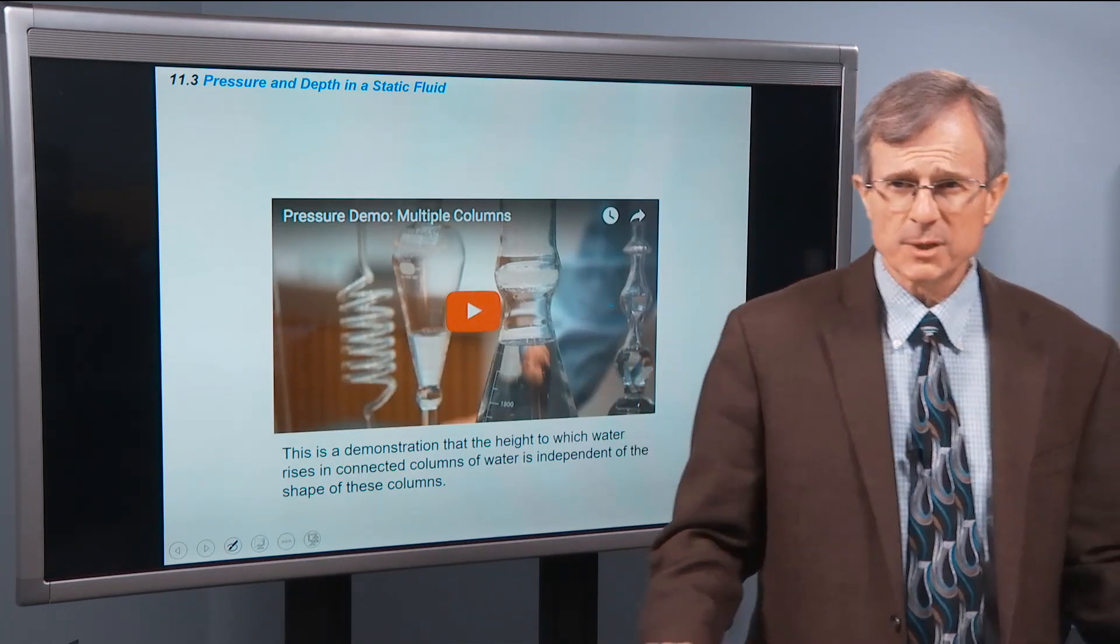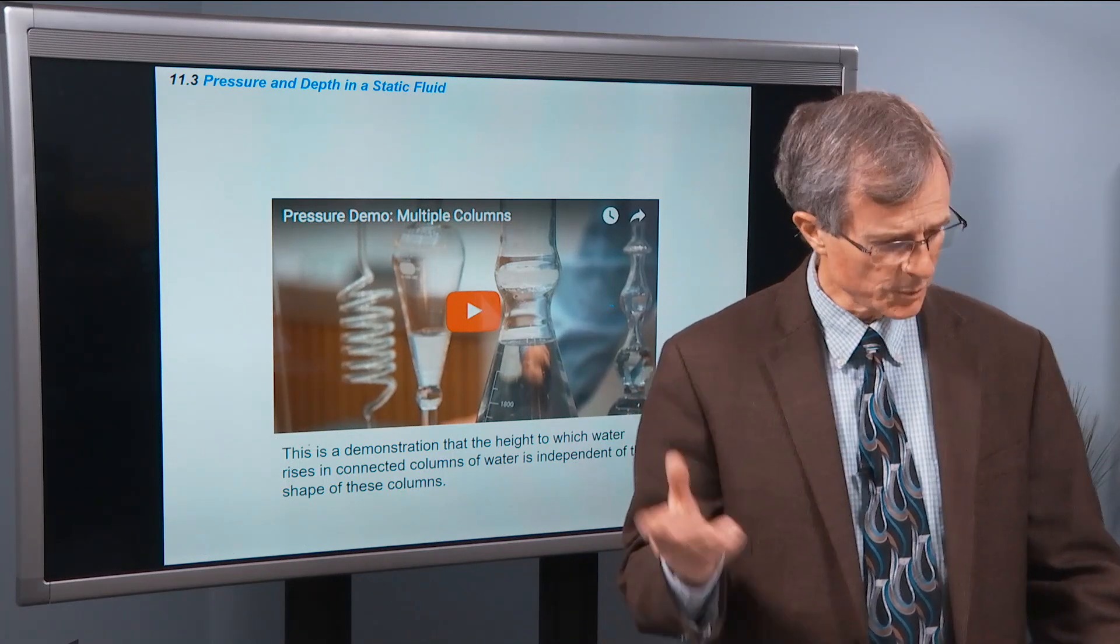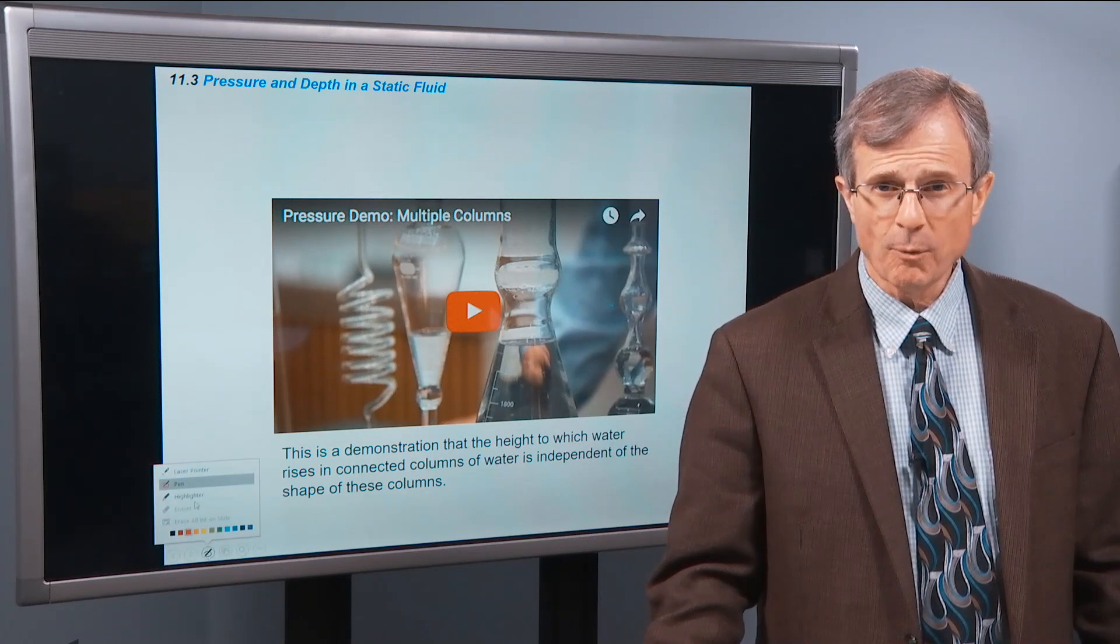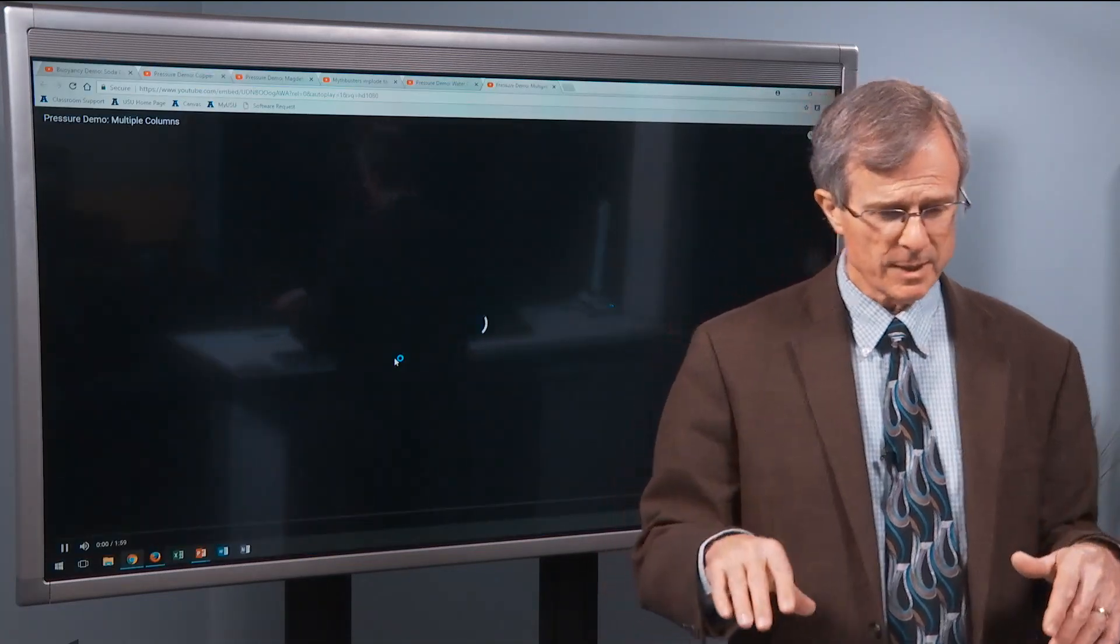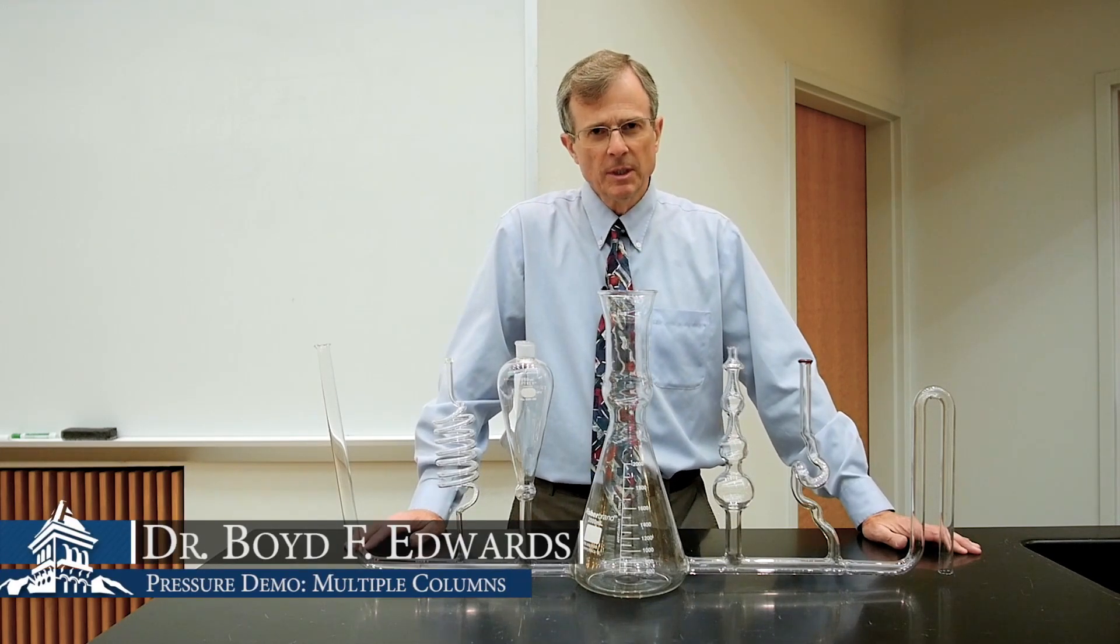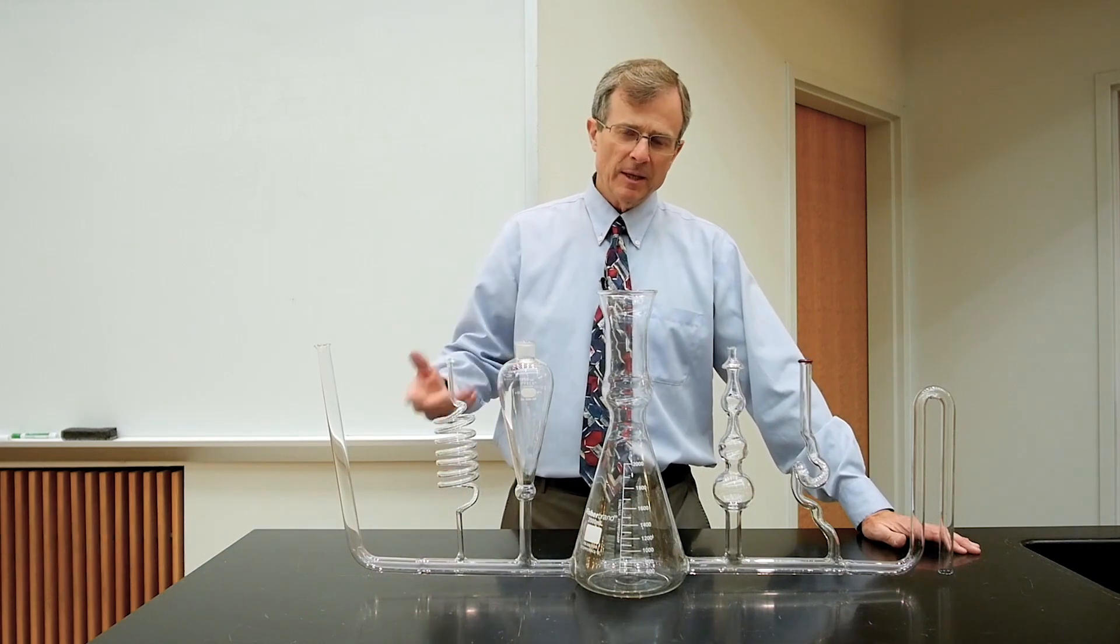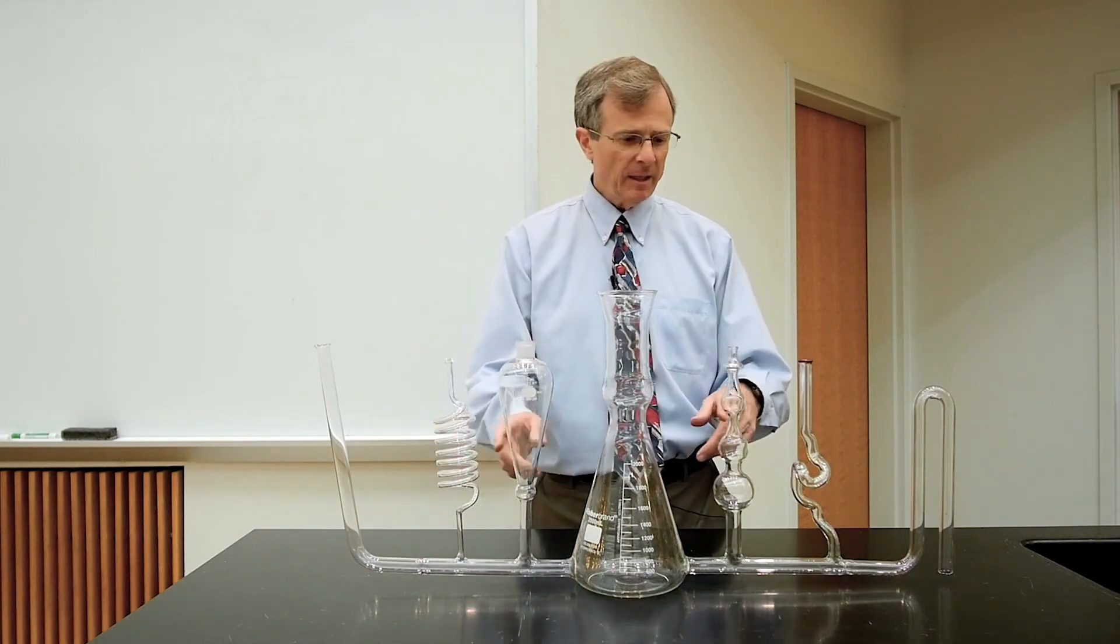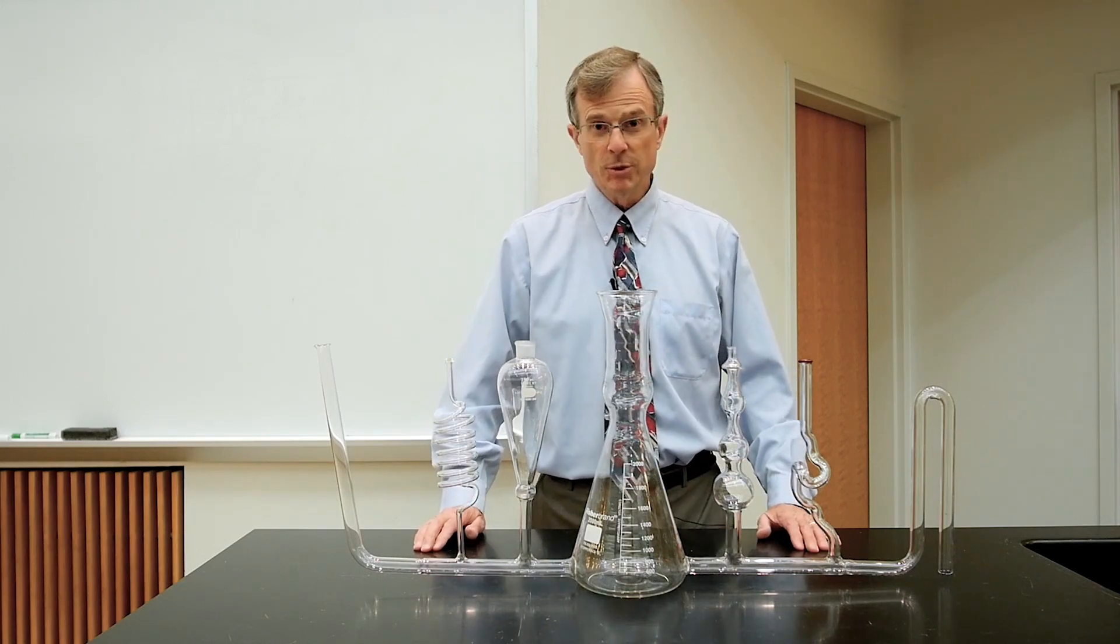There's a demonstration that the height that water rises is independent of the shape of the columns, which is an illustration of what we've been talking about. It doesn't matter the horizontal extent or what it looks like. What matters is the depth. This is a demonstration of the variation of pressure with the depth of a fluid. And in particular, we're thinking about it the opposite way. How high is a column of fluid going to be depending on the shape of the column of the fluid? So let's just do the experiment.